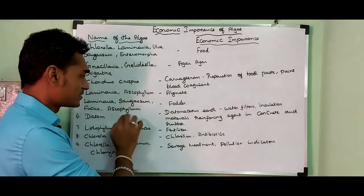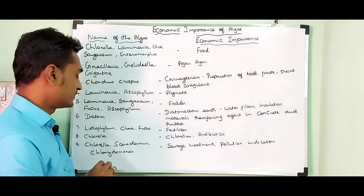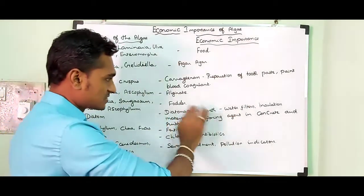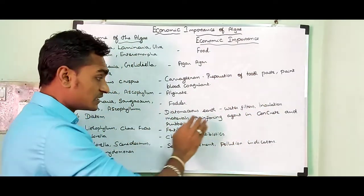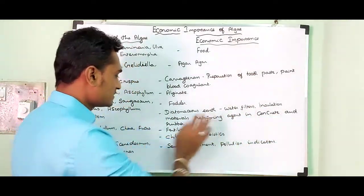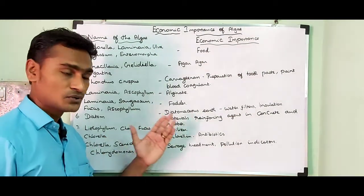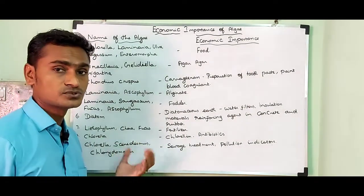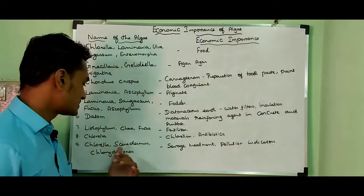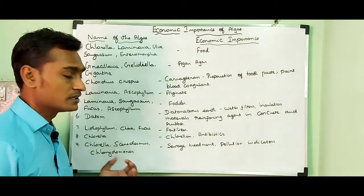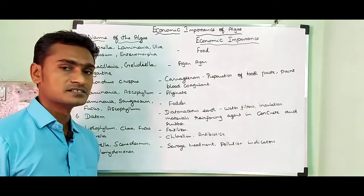Laminaria, Sargassum, Fucus and Ascophyllum are used as fodder — as cattle feed. Diatoms produce diatomaceous earth used in water filters, insulation materials and as a reinforcing agent in concrete and rubber. Lithophyllum, Chara and Fucus are used as biofertilizers. Chlorella is used to extract chlorellin and antibiotics. Chlorella, Scenedesmus and Chlamydomonas are used as pollution indicators and in sewage treatment.